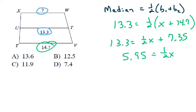Now I need to get that X by itself, so I'm going to multiply by 2, or divide by 1 half, whichever you prefer to say. So 5.95 times 2 is 11.9.